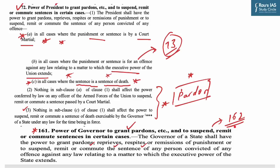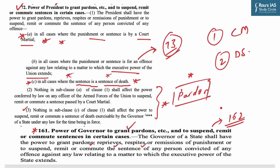The basic differences between the pardoning power of the Governor and the President are: first, the President can pardon sentences inflicted by court martial — military courts — and the Governor cannot; second, the President can pardon death sentences while the Governor cannot. Even if a state law prescribes a death sentence, the power to grant pardon lies with the President and not the Governor. However, the Governor can suspend, remit, or commute a death sentence but cannot pardon it. Both the Governor and the President have concurrent power in respect of suspension, remission, and commutation of death sentences.